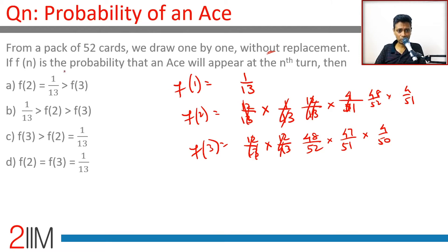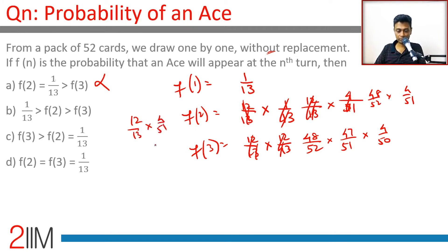Now let's compare: is f(2) greater than or less than 1 by 13? f(2) is 48 by 52 into 4 by 51, which equals 1 by 13 into 48 by 51. So f(2) is less than 1 by 13.